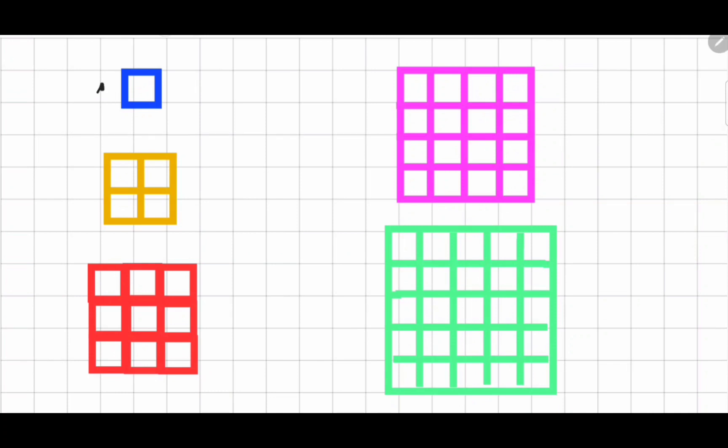Well, to make a square number, all we have to do is multiply a number by itself. This will always result in a square number.